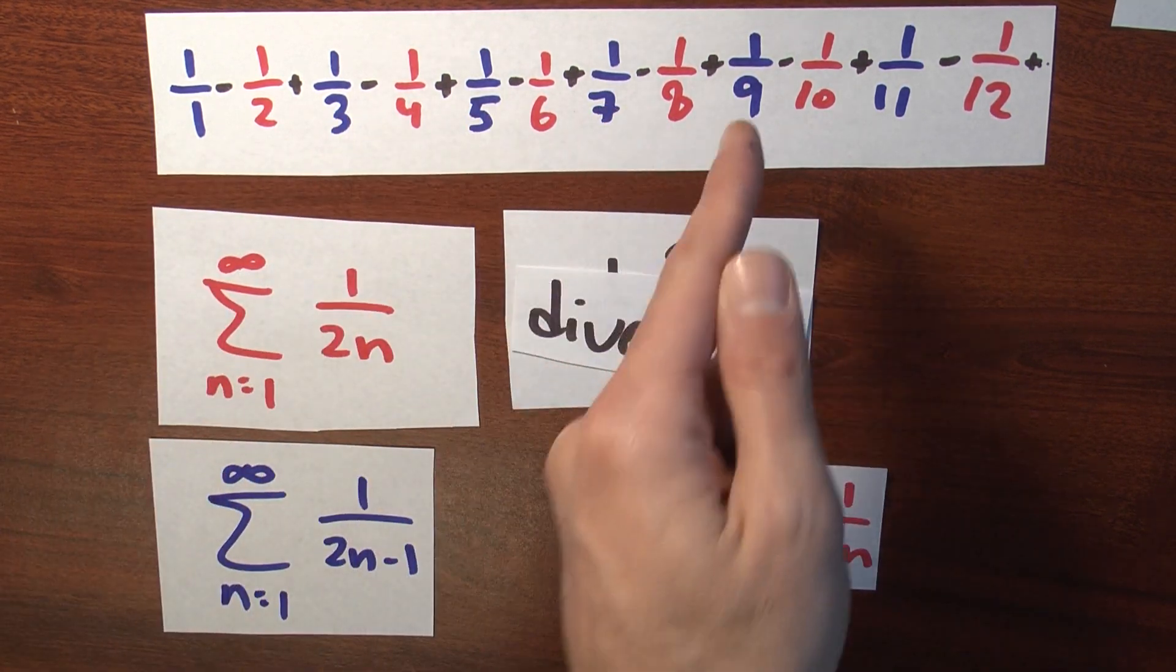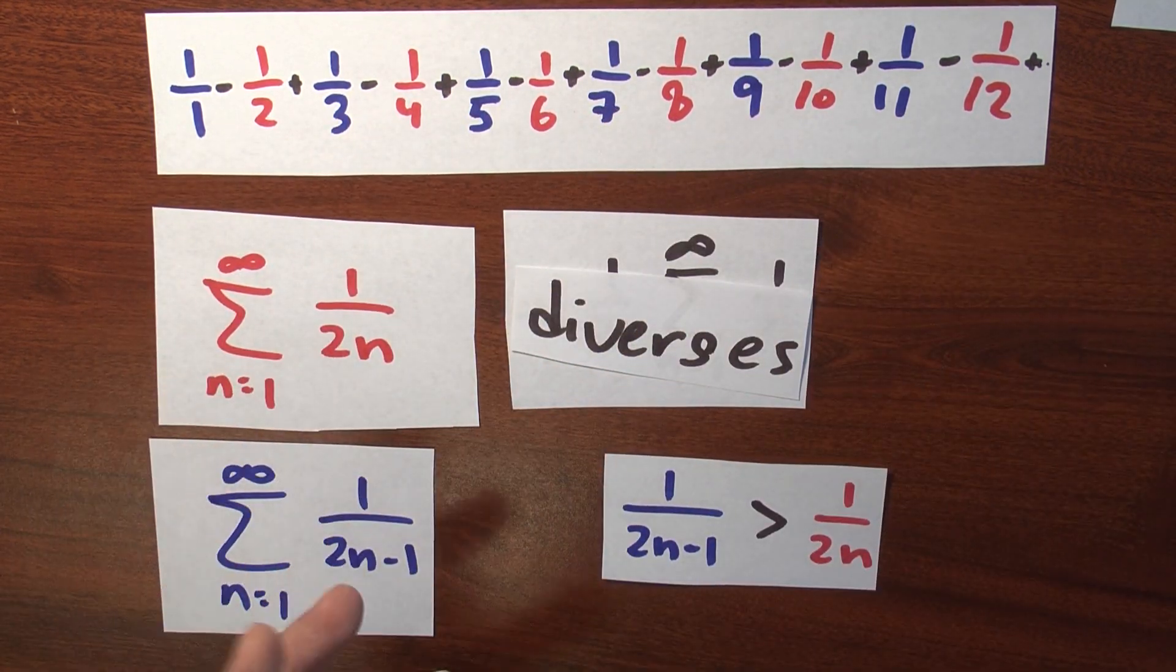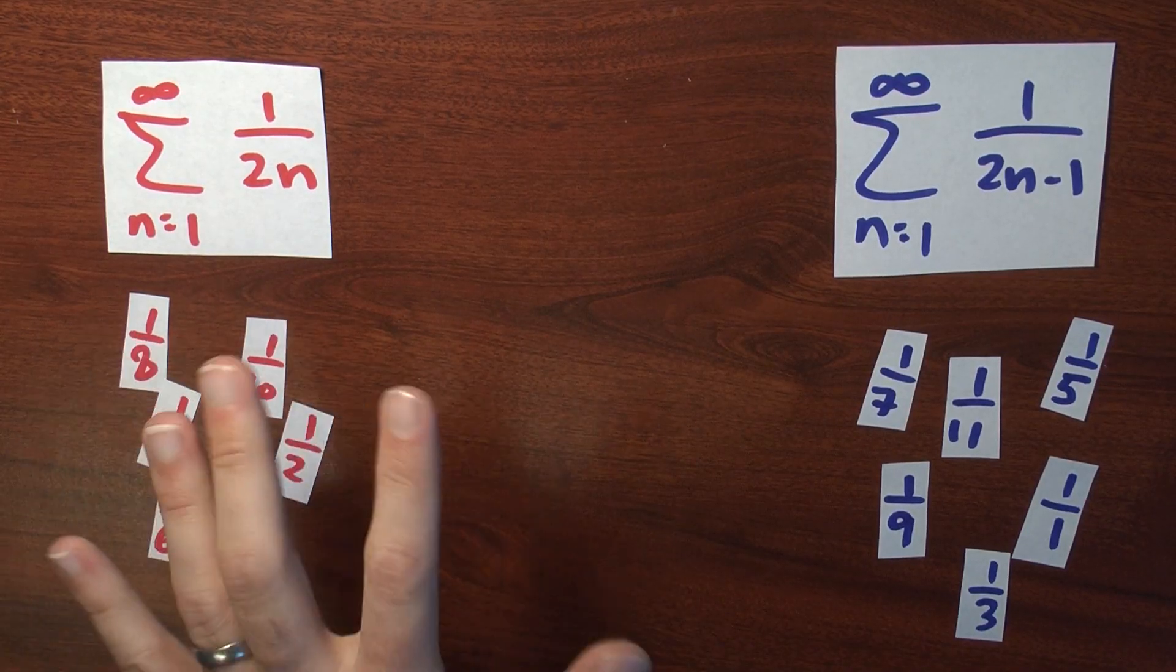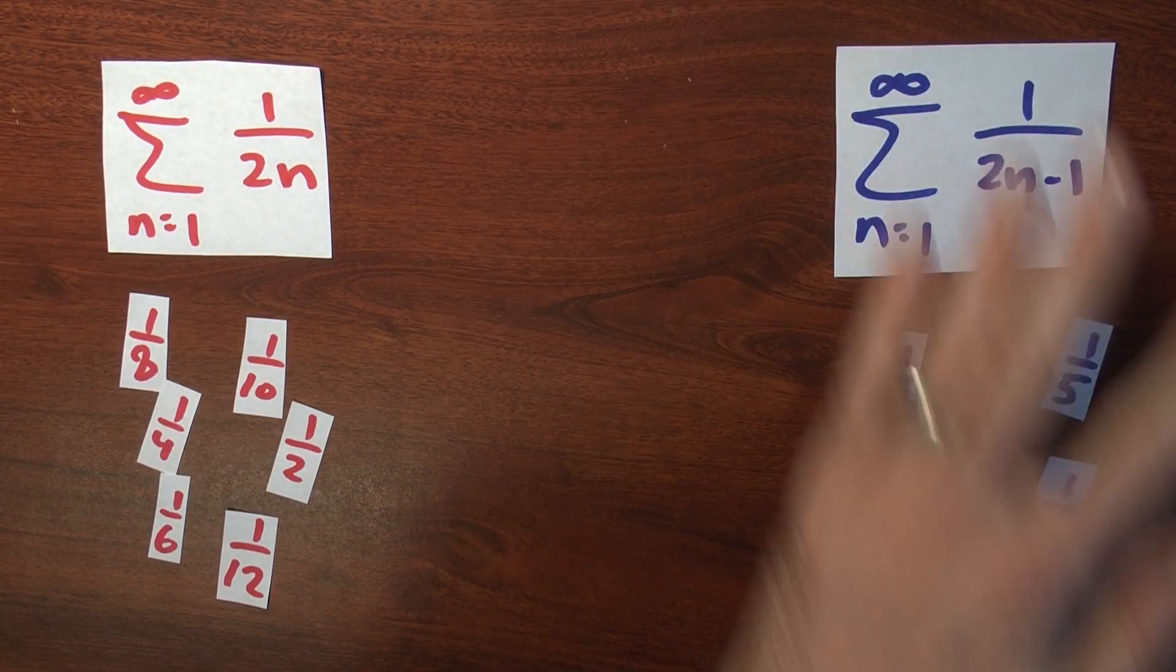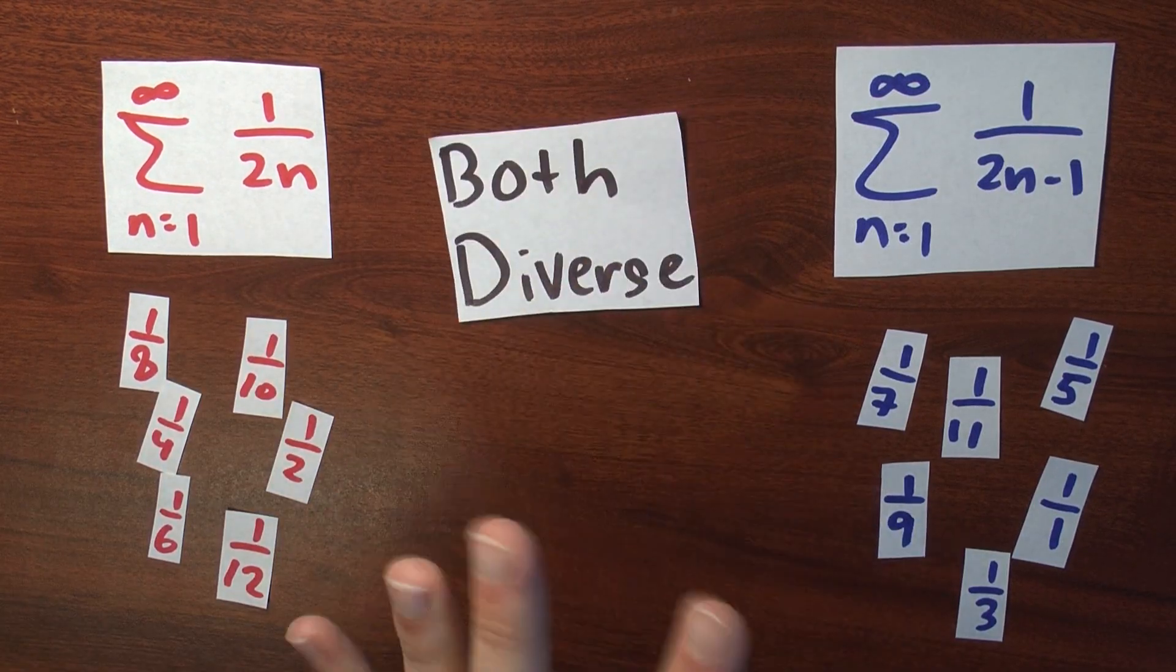The sum of just the positive terms in the alternating harmonic series diverges. And yet somehow, that series has a finite value. So in the alternating harmonic series, the negative terms diverge. The positive terms diverge. They both diverge.